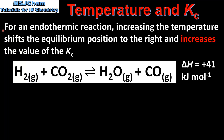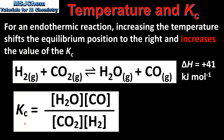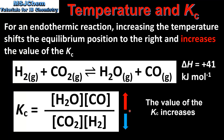For an endothermic reaction, increasing the temperature shifts the equilibrium position to the right and increases the value of Kc. Here we have the reaction between hydrogen and carbon dioxide to produce water vapour and carbon monoxide. As we can see from the sign of the enthalpy change, the forward reaction is endothermic. When the equilibrium position shifts to the right, the value of the numerator increases and the value of the denominator decreases, therefore the value of Kc increases.